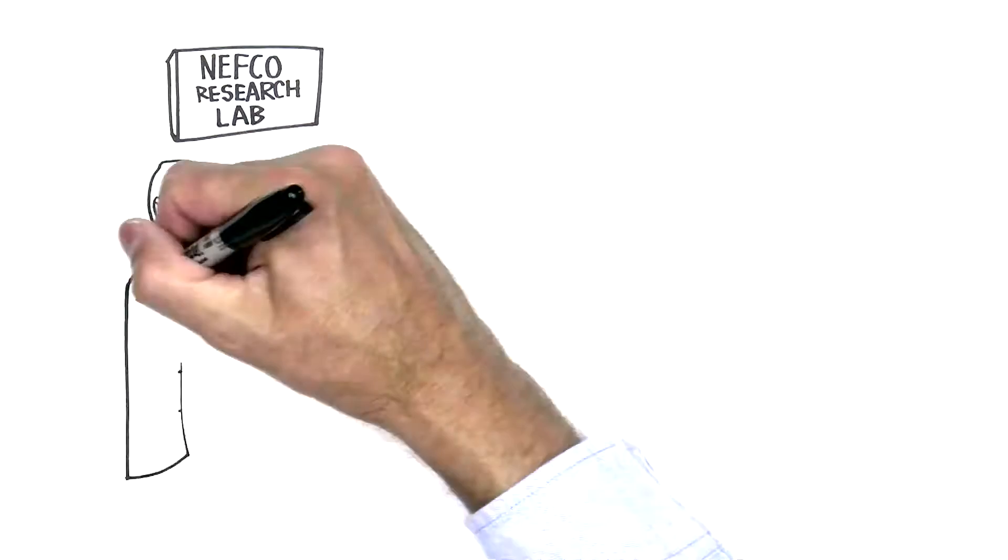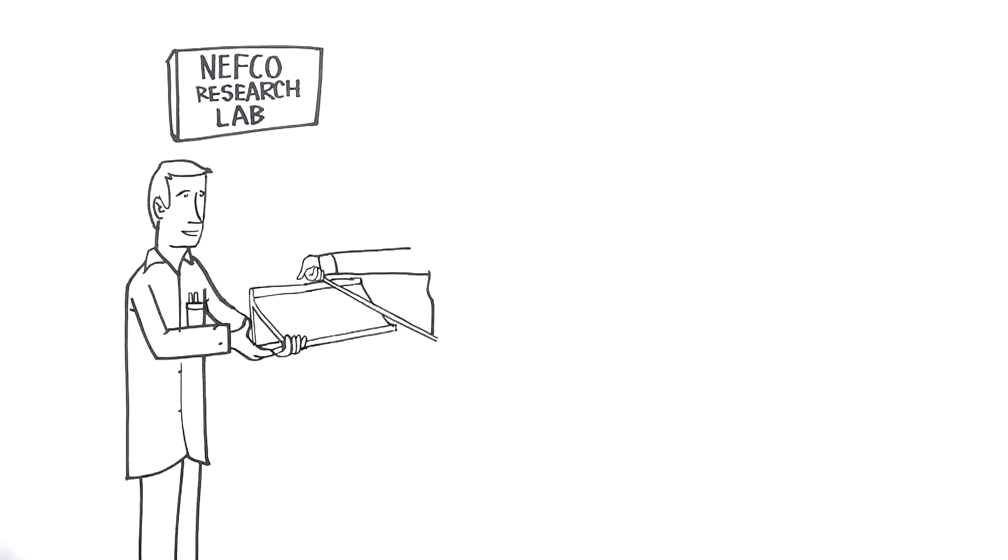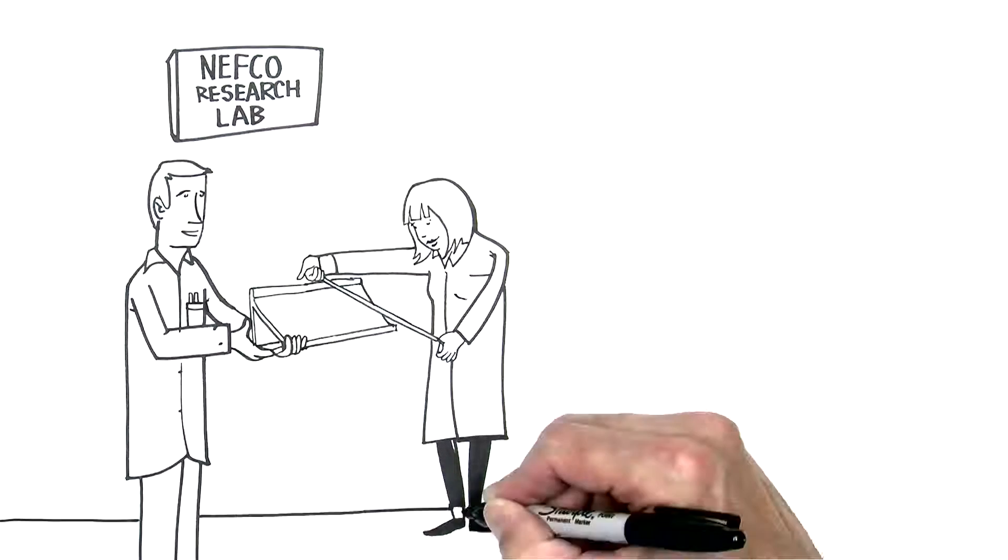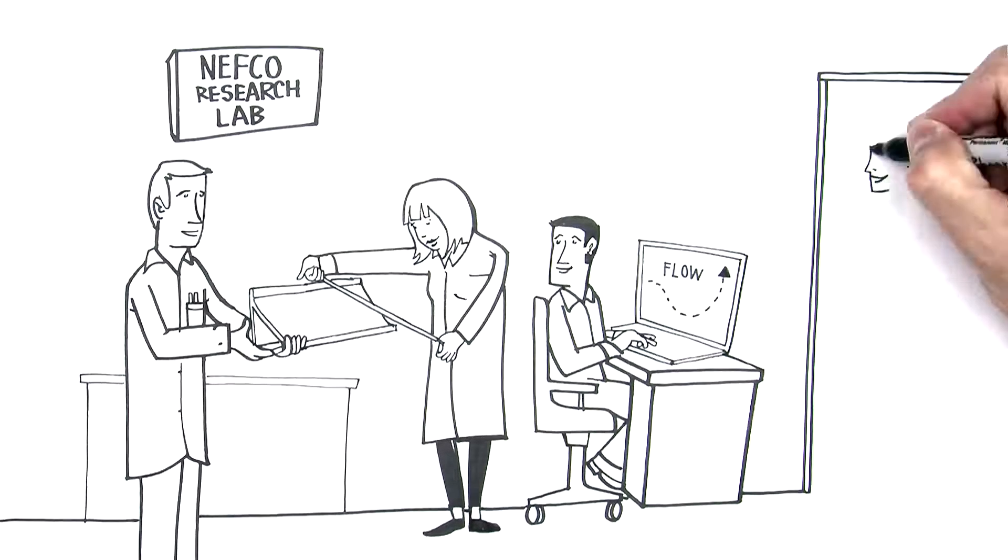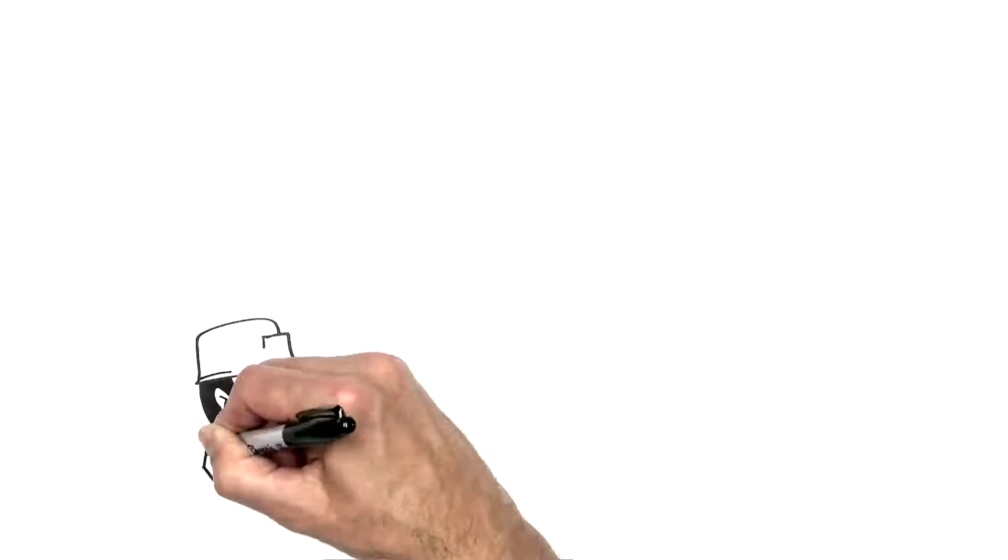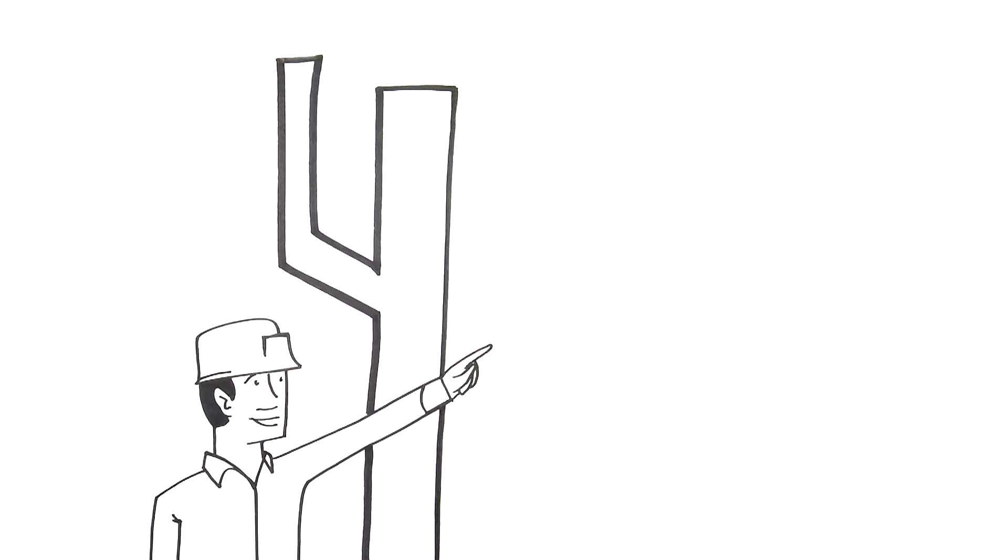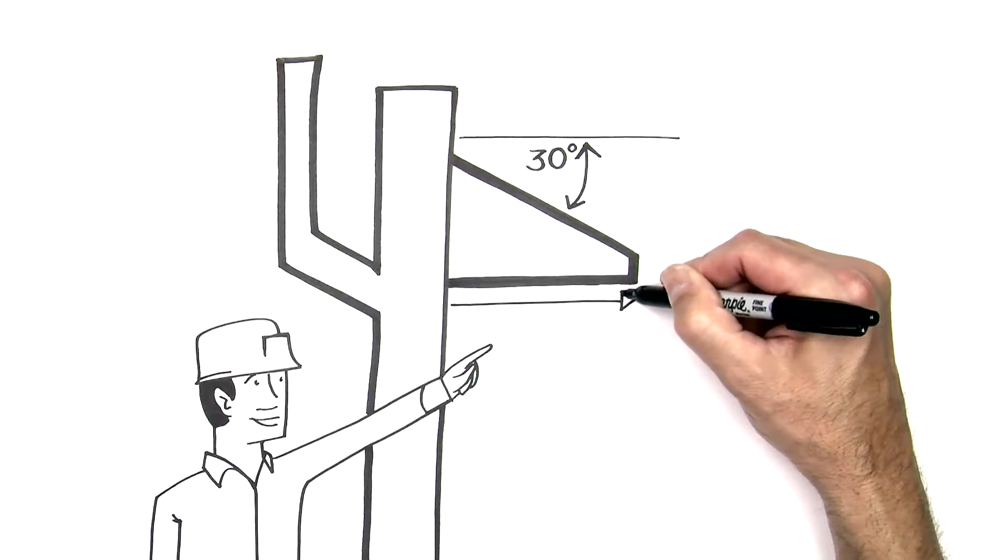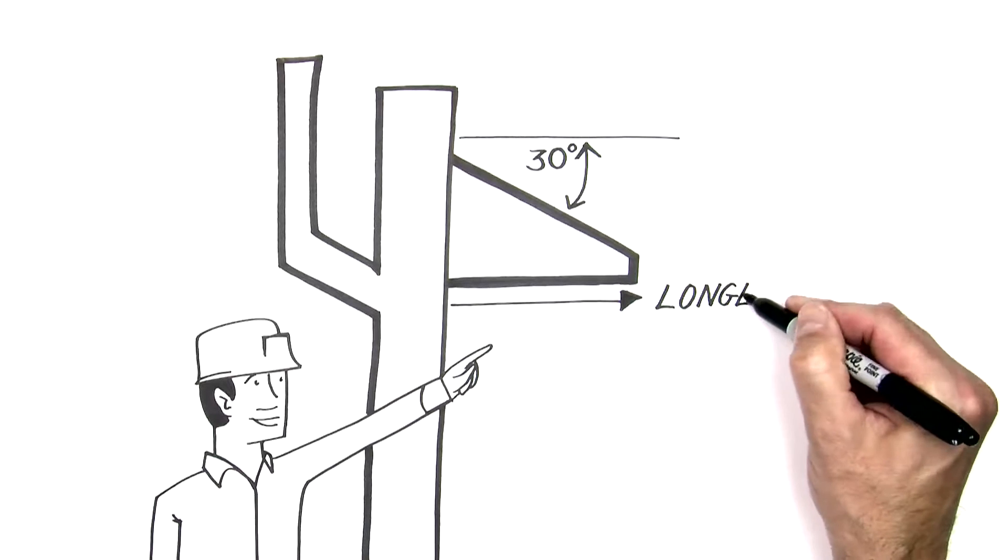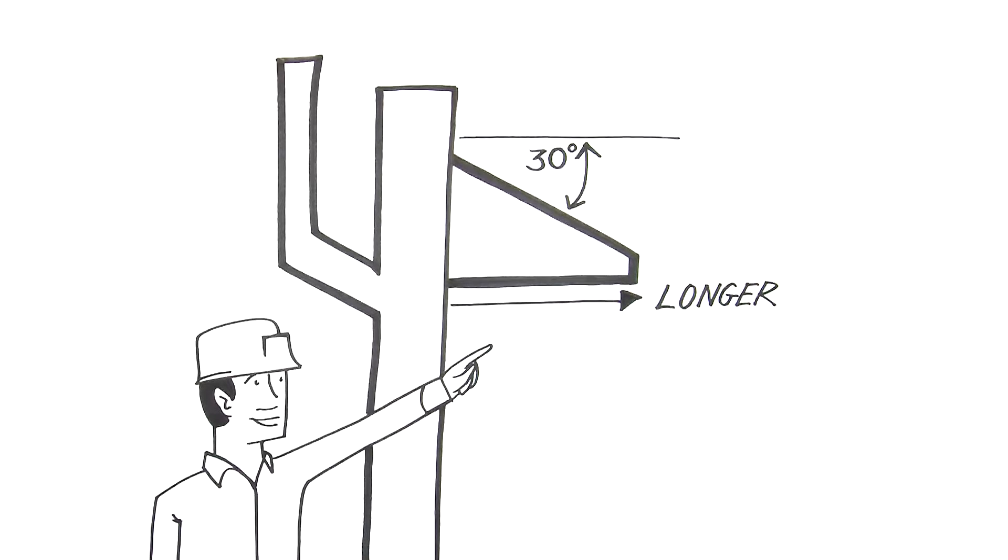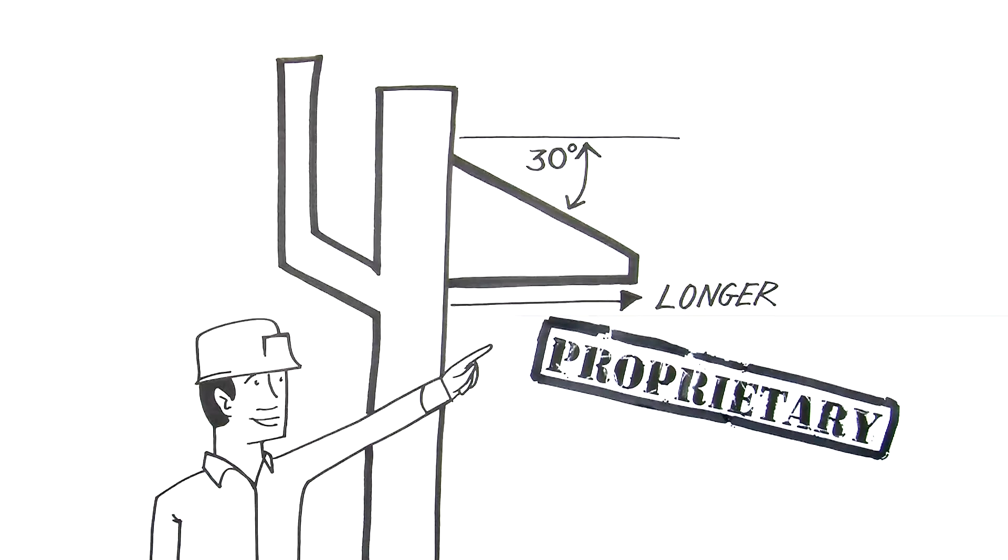Meanwhile, here at NEFCO, we continued to study baffle hydrology and found two keys to improved baffle performance: the inclination angle and the horizontal projection into the tank. Changing the angle from 45 degrees to 30 degrees redirects the current flow more effectively. Increasing the projection based on tank diameter enables the baffle to intercept a greater volume of solids. These are two proprietary innovations only available from NEFCO.